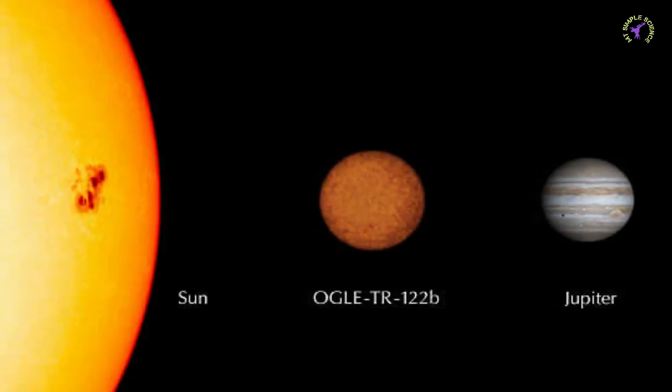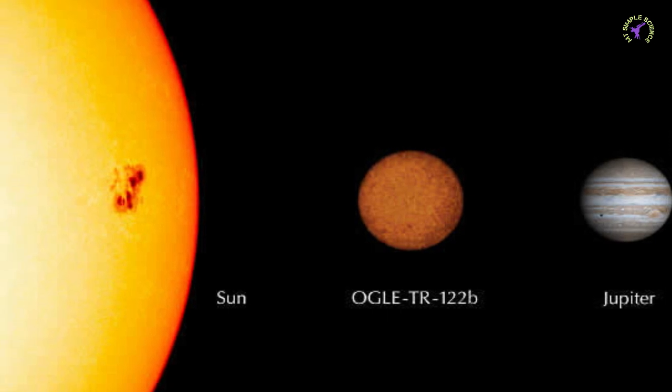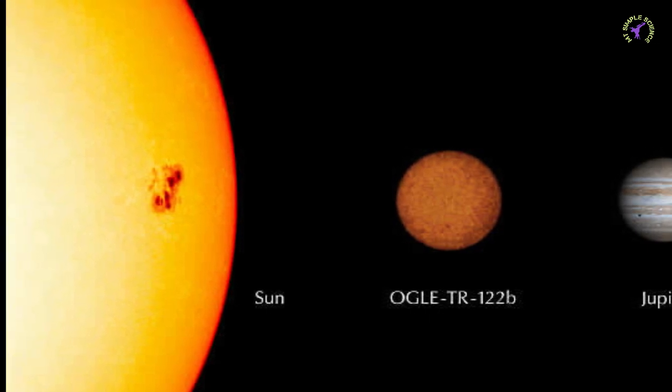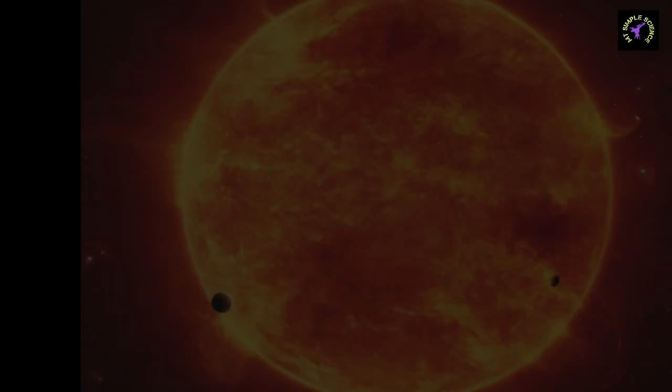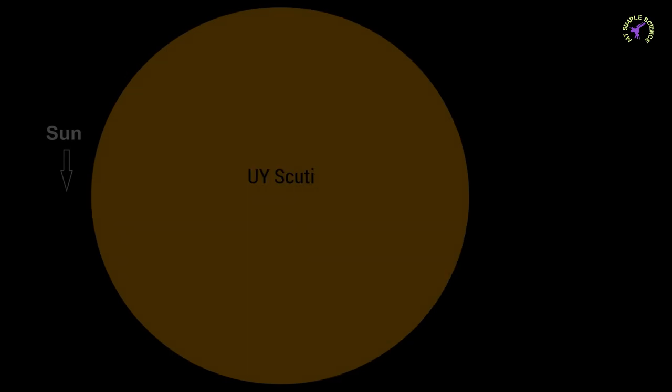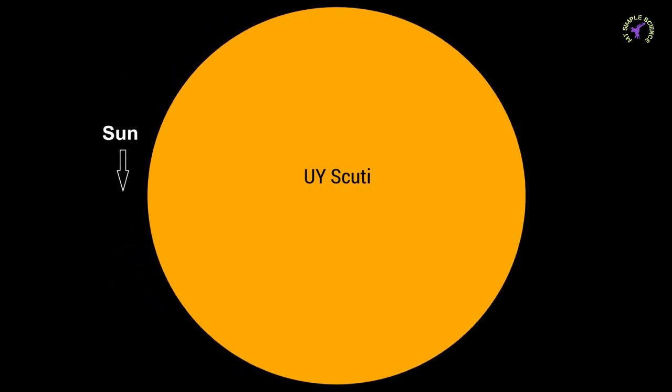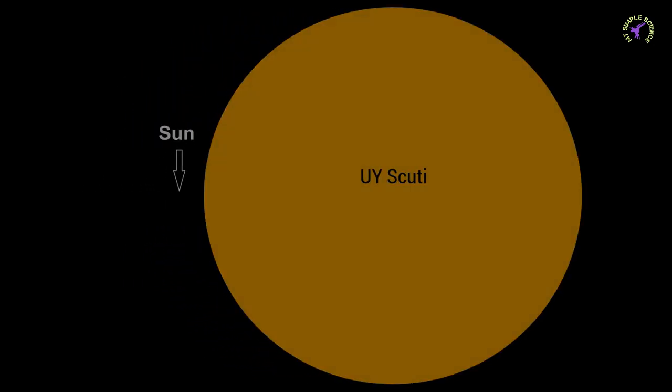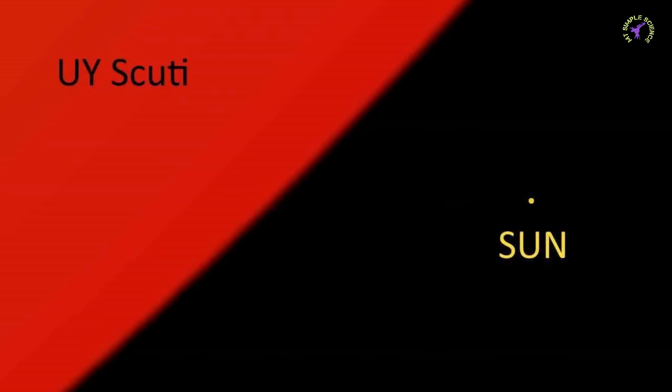The smallest star found in the universe is OGLE-TR-122b, which is a red dwarf having a diameter only 0.12 times the Sun's diameter. The biggest star found in the universe is UY Scuti, which is a red supergiant having a diameter 1,708 times the Sun's diameter.